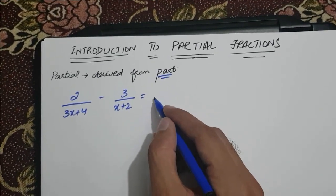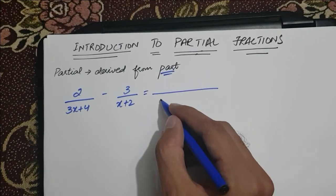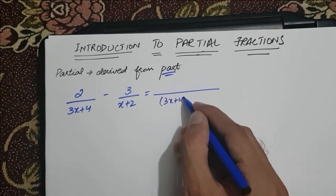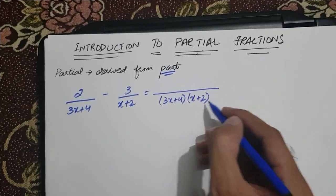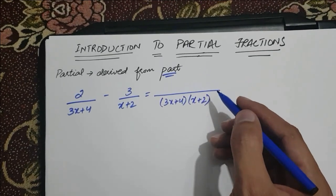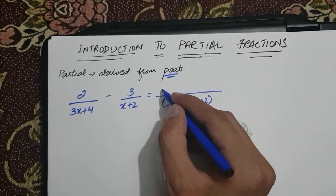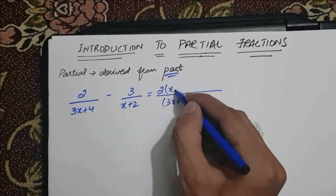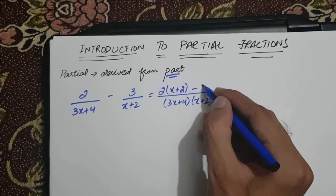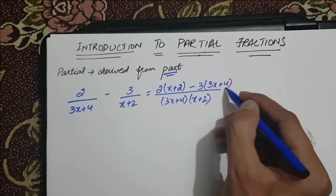So what do we do? First of all, we take its LCM, that is 3x plus 4 into x plus 2. And in the numerator, we get 2 multiplied by x plus 2 minus 3 times 3x plus 4.